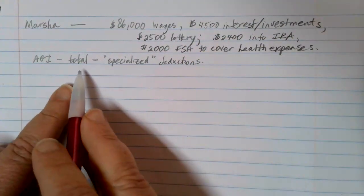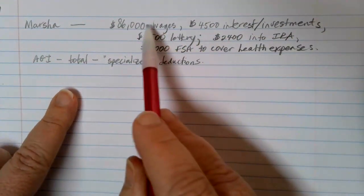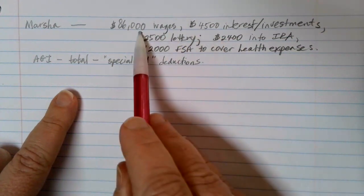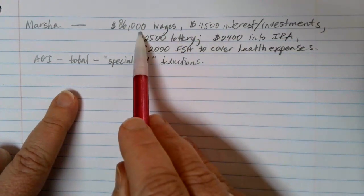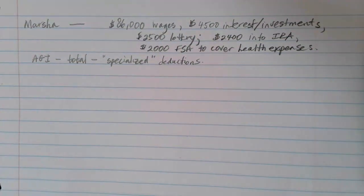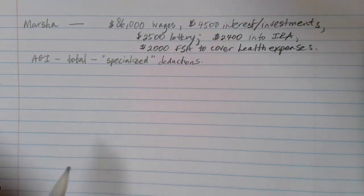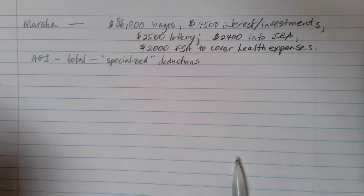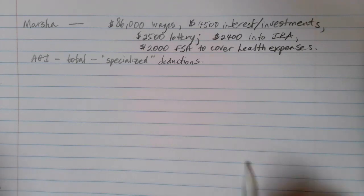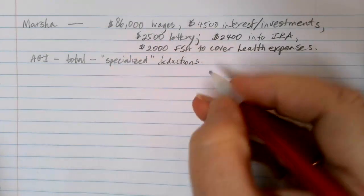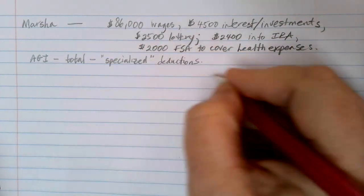In this case, her total income can be calculated by adding all the money in: $86,000 in wages, $4,500 in interest, and a $2,500 lottery win. If we add that together, we end up with $93,000 in total income.